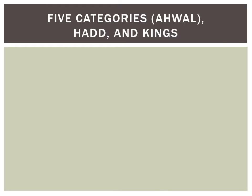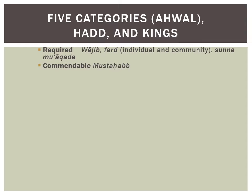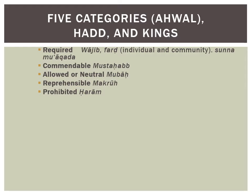Islamic law generally tries to put all possible actions into one of five categories. Some things are required. Some things are commendable — you ought to do them and will get credit if you do, but omitting them is not punishable the same way as omitting something required. Many things are allowed or neutral. Some things are reprehensible — if you do them, you are certainly blameworthy. And some things are absolutely prohibited.